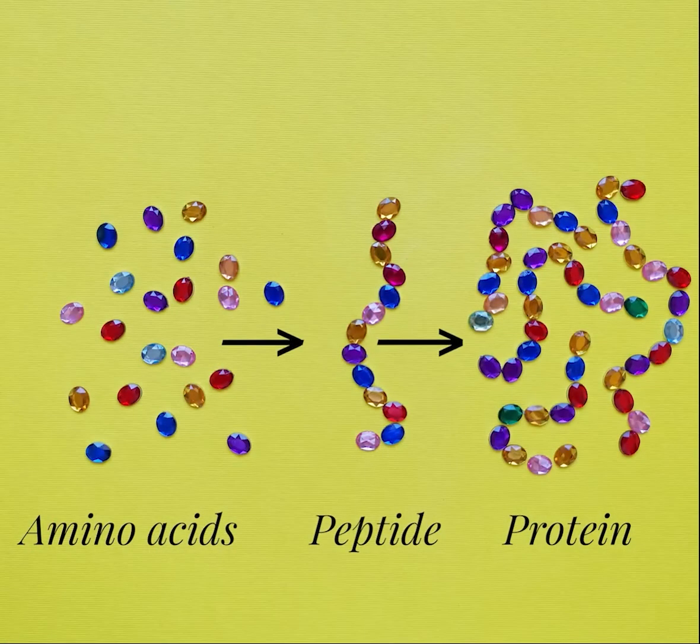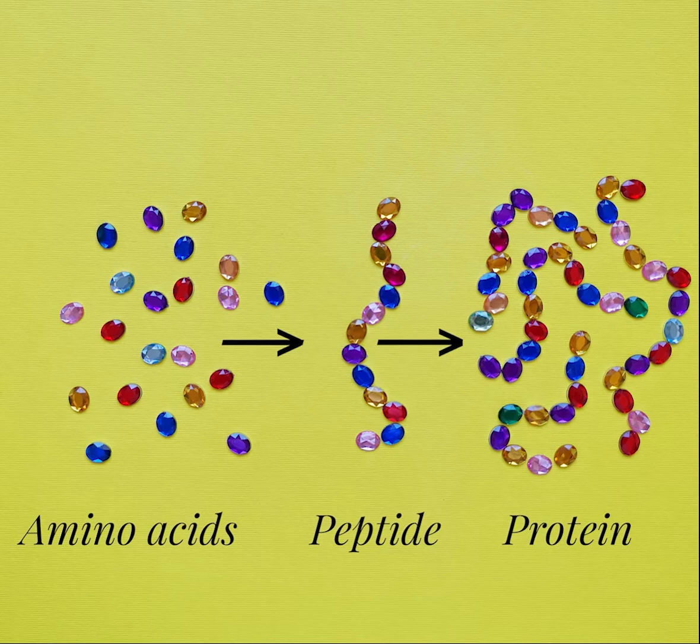I want you to visualize an amino acid as a single bead in a necklace. Amino acids will search out and begin binding with other amino acids to build short chains, like a single bead will link with other beads to build an entire necklace. These short chains are called peptides.